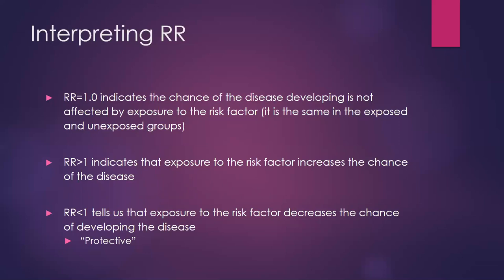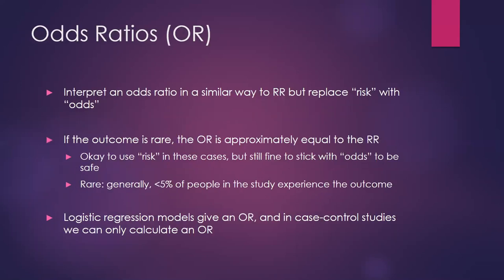The scale for relative risk goes from zero to infinity: zero to 0.99 indicates protective effects, and 1.01 to infinity indicates the exposure increases the risk of the outcome. The odds ratio is interpreted essentially the same way — we say the odds of the outcome is X times as high in the exposed versus unexposed group.